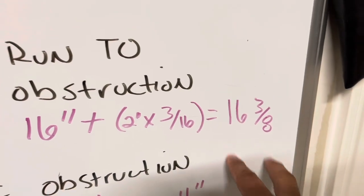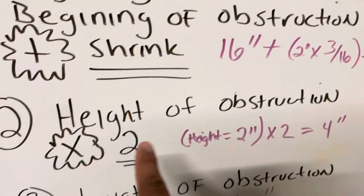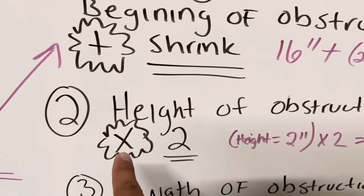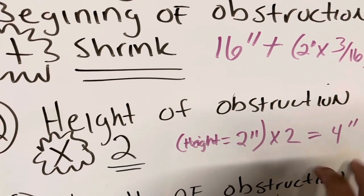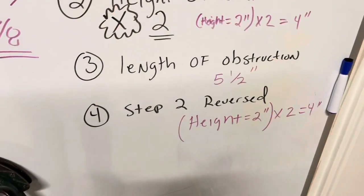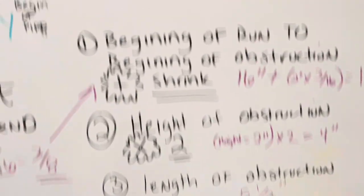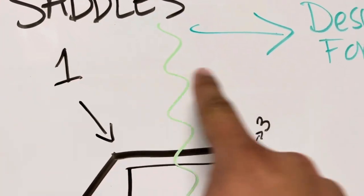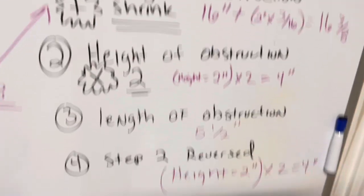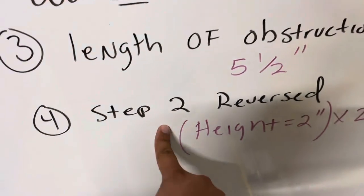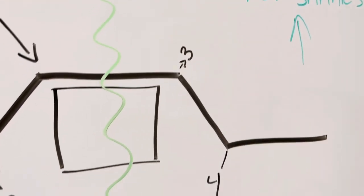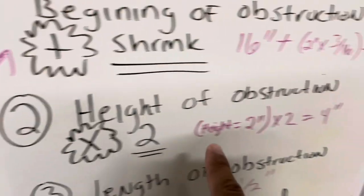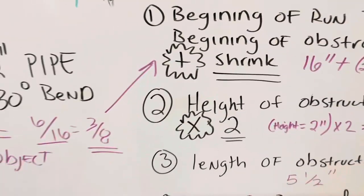16 and 3/8 is how we got that measurement. The height of the obstruction for step two: 2 inches times 2 equals 4. The length of the obstruction, which was between one and three, and then just the step two reversed. So from three to four, we do step two again.